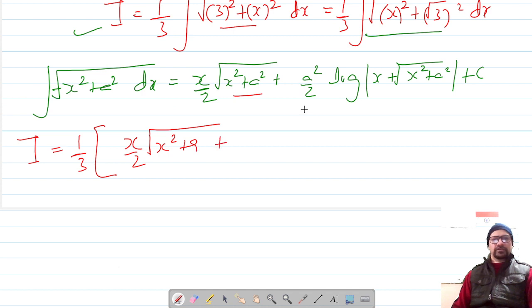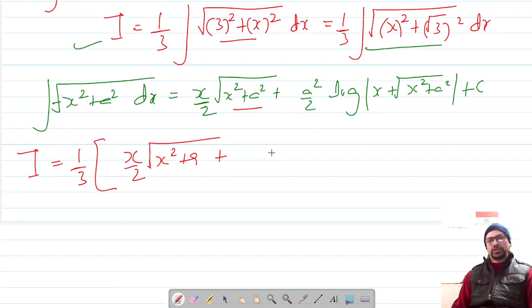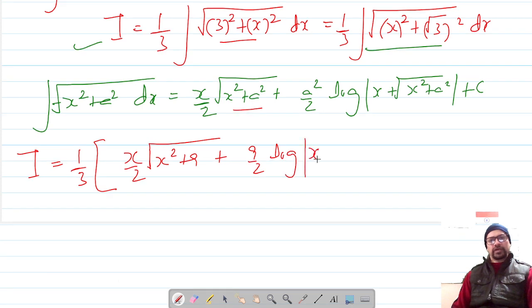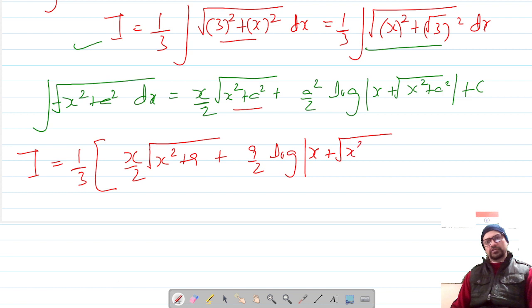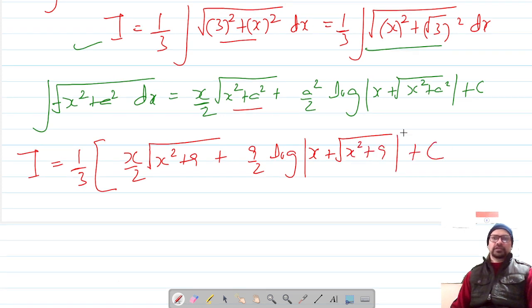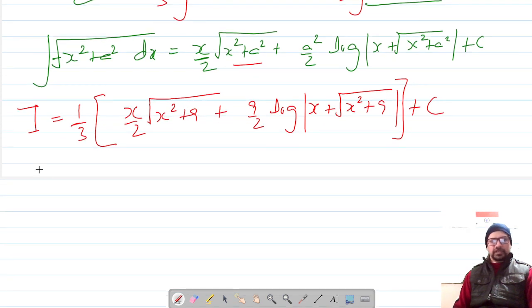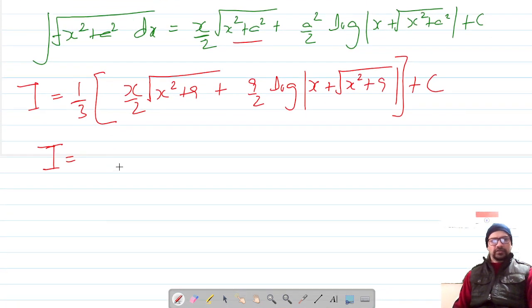Plus a squared—a squared is 9—by 2 log of x plus under root x squared plus a squared, so it is x squared plus 9, plus c. Box it closed, and now this is finally the answer.